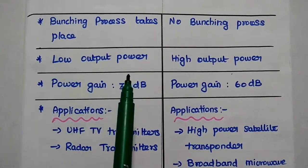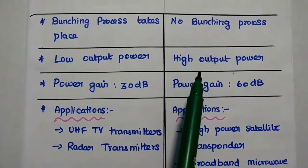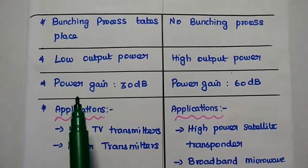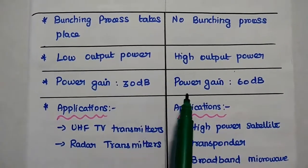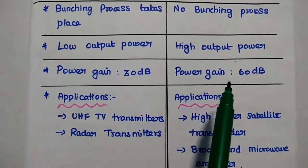It has low output power. TWTA has high output power. The power gain of klystron amplifier is 30 dB. For this TWTA, it is 60 dB.